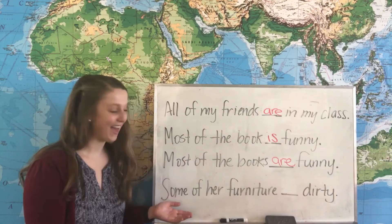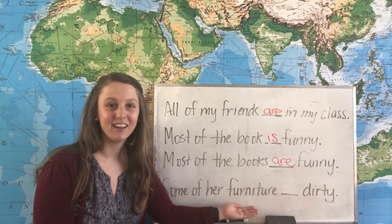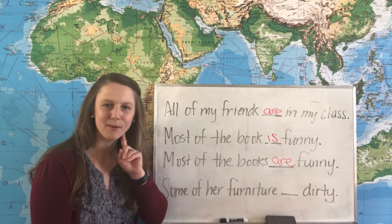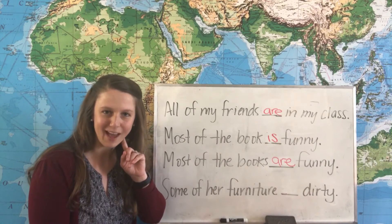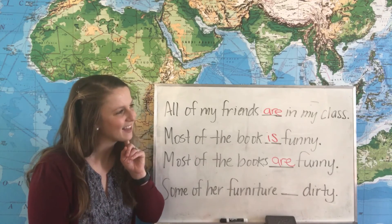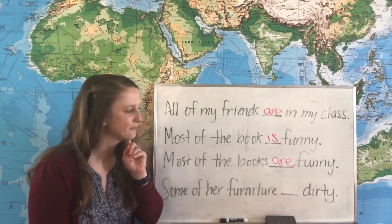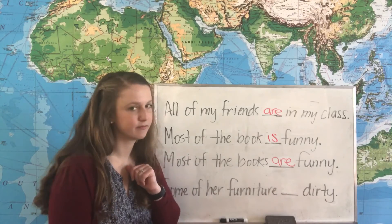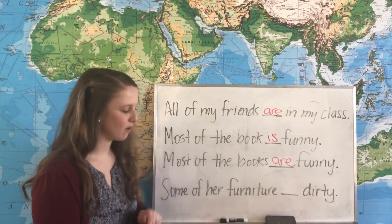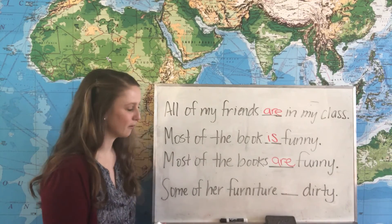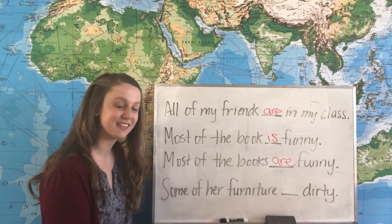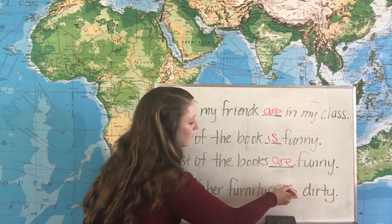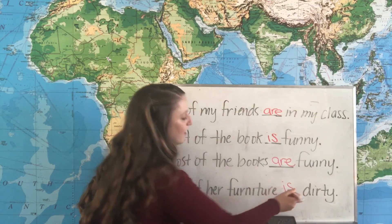Our last example has furniture, which is a non-count noun. Can you remember what we do with non-count nouns? Do they act like singular or plural? 'Some of her furniture dirty.' Non-count nouns need singular verbs — we always use them with singular verbs. So we say: 'Some of her furniture is dirty.'